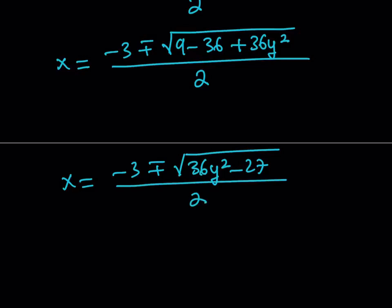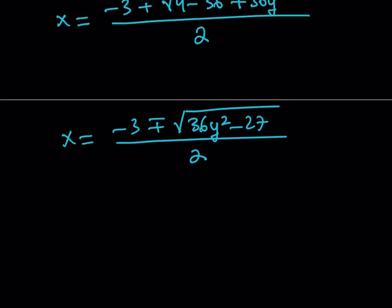Now, what can I do here? I need to take out a perfect square if possible. And these two numbers actually have 9 in common, and that's a perfect square, which is perfect. So I can pull out a 9, and that's going to come out as a 3. So inside, after division by 9, we should be getting 4y² minus 3.